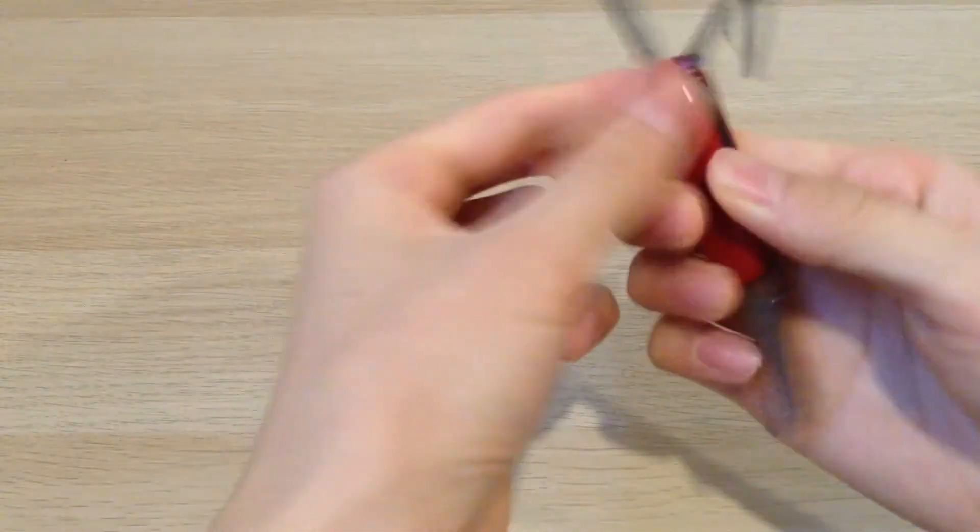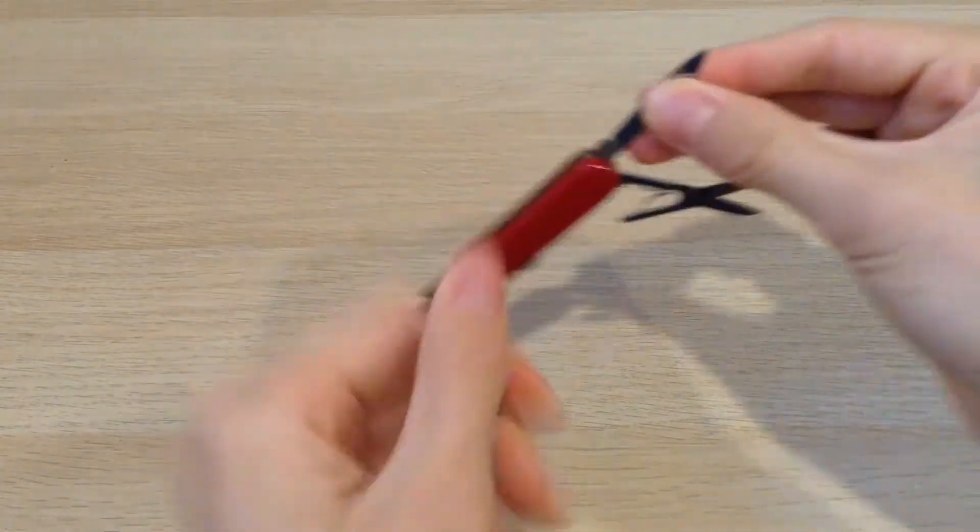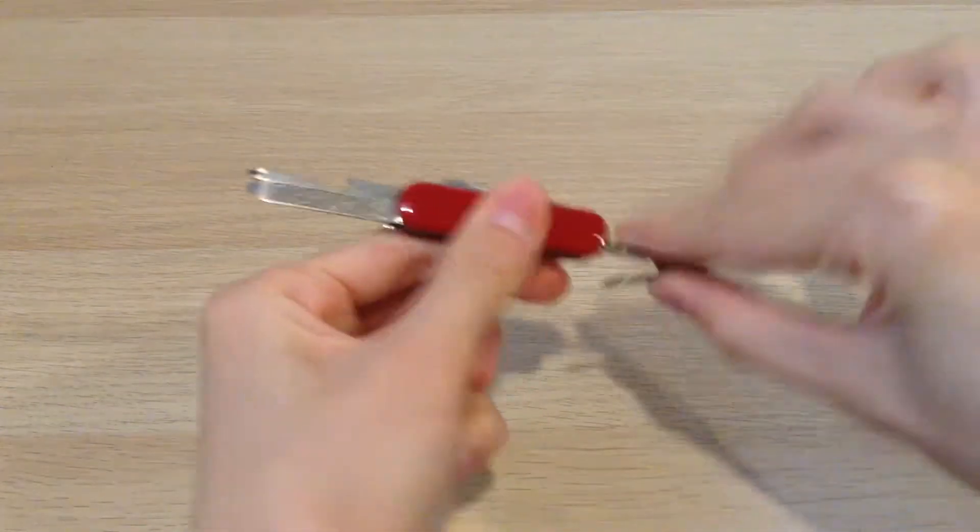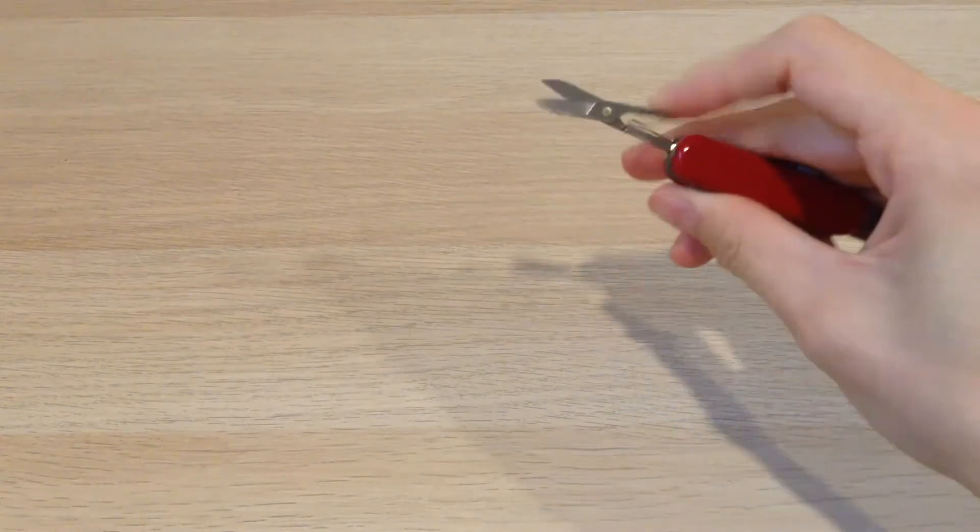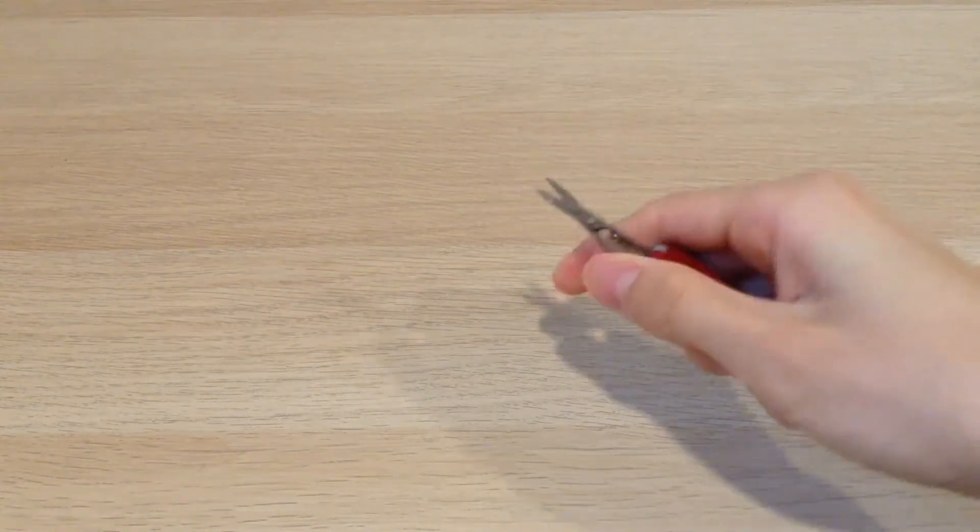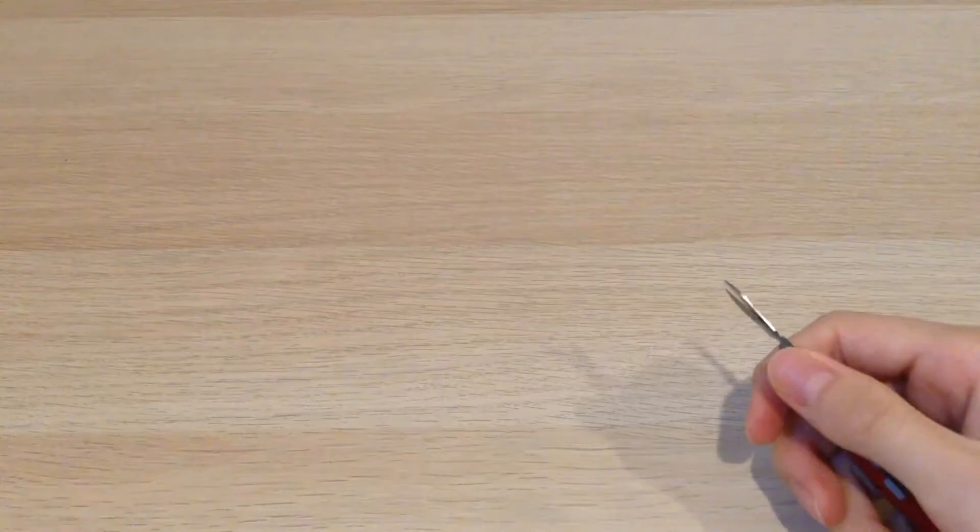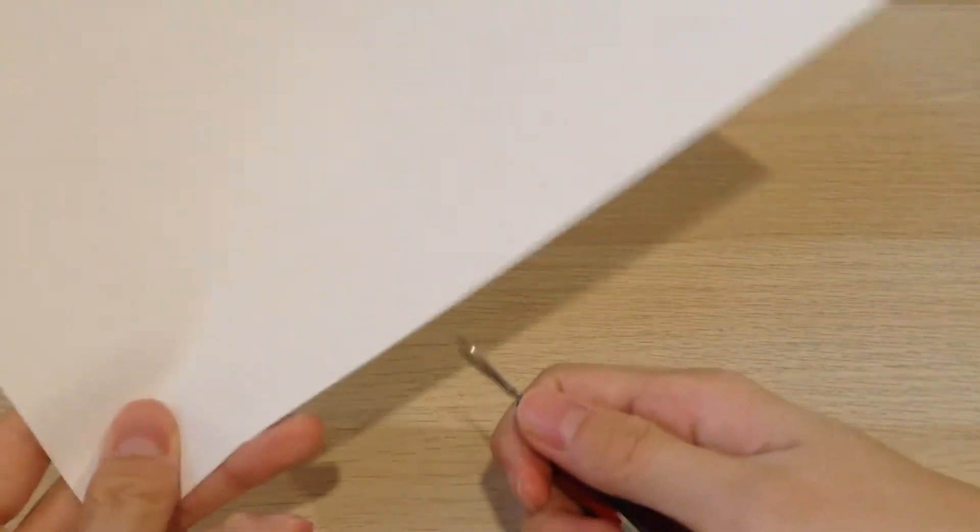Here are the scissors. I'm gonna just put the knife away so it's easier to use the scissors. They're a little smaller than the ones on the Swiss card but it should be fine. Got a piece of paper here to try cutting.